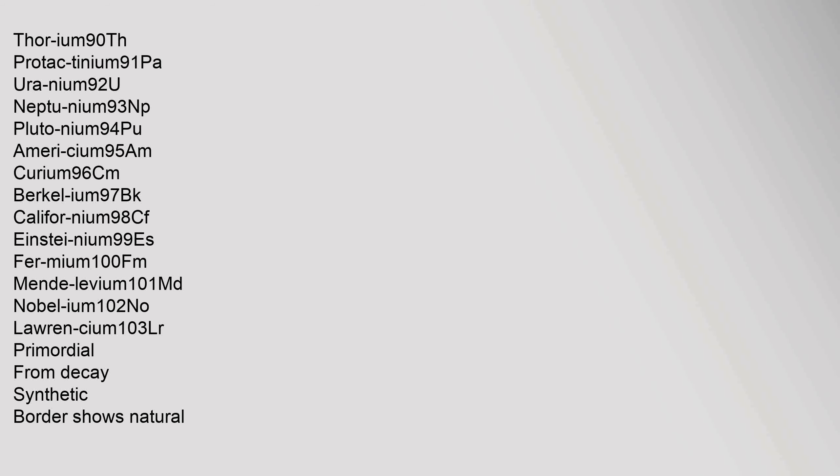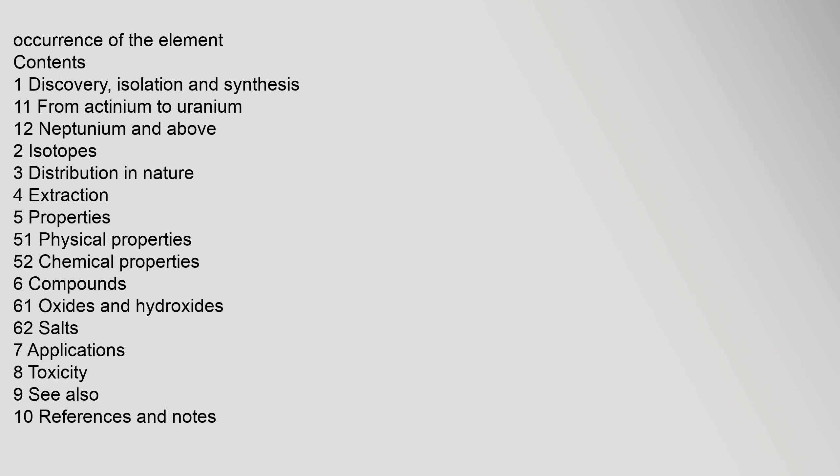Contents: 1. Discovery, isolation and synthesis — 1.1 From actinium to uranium, 1.2 Neptunium and above. 2. Isotopes. 3. Distribution in nature. 4. Extraction. 5. Properties — 5.1 Physical properties, 5.2 Chemical properties. 6. Compounds — 6.1 Oxides and hydroxides, 6.2 Salts. 7. Applications. 8. Toxicity. 9. See also. 10. References and notes.